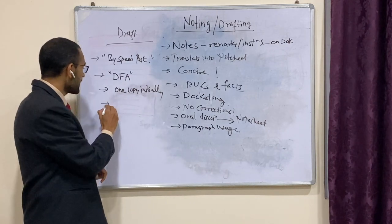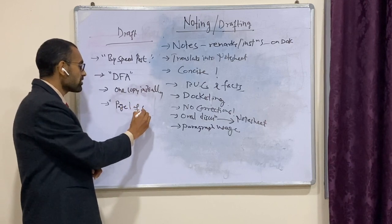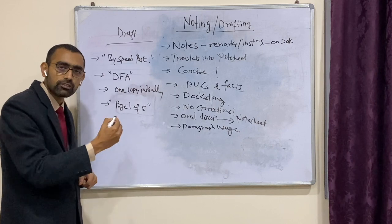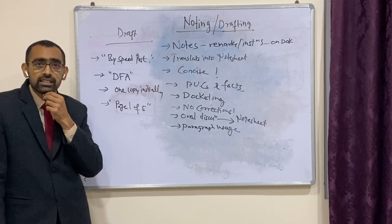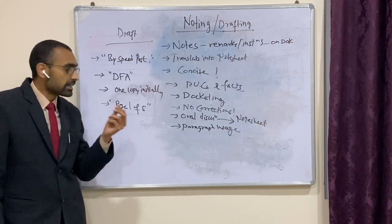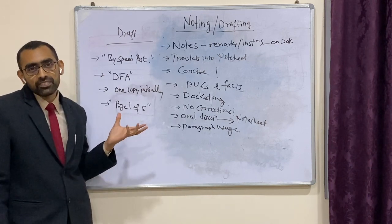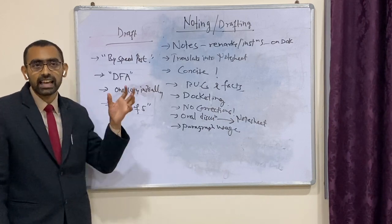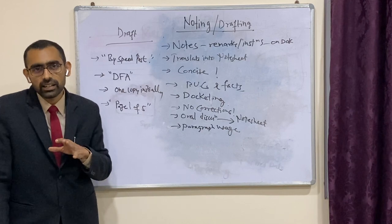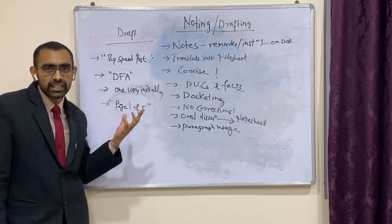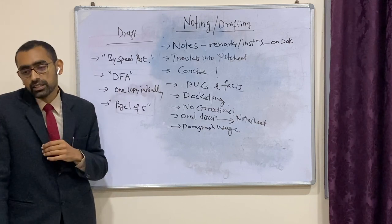When the draft contains multiple pages, something like this has to be mentioned in the footer: page one of five, page two of five, page five of five — so that the person receiving the draft knows how many pages there are. Sometimes one page goes missing, and since there is no page numbering, we cannot tell how many pages were there originally. This is especially important for financial calculations, sanctions, and tabulations, but should be a standard practice in all correspondence.